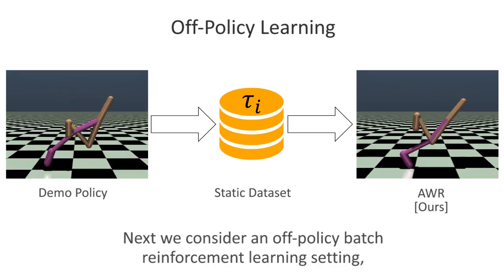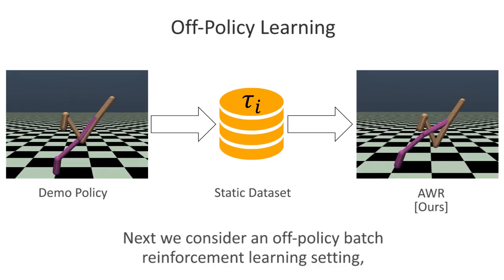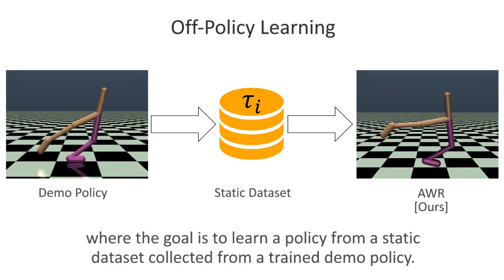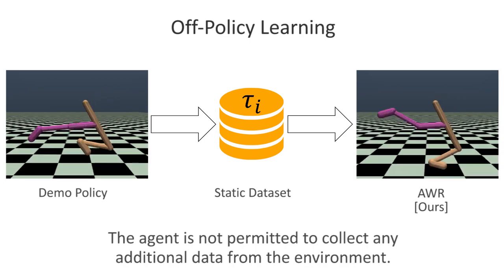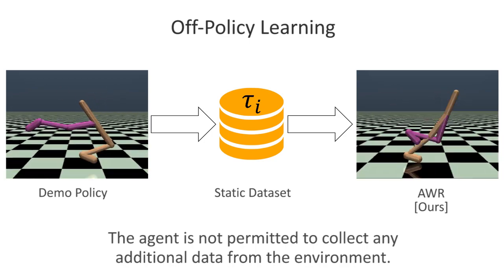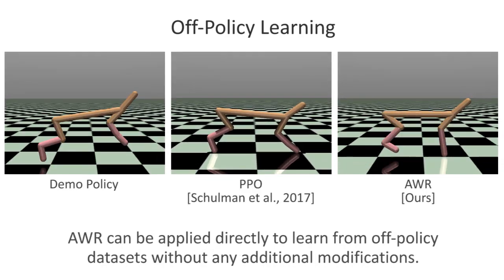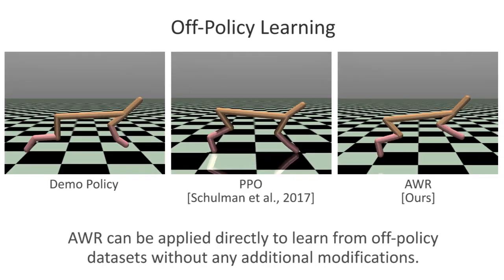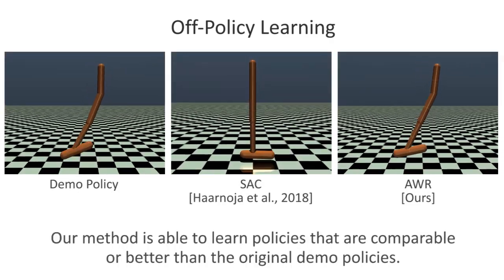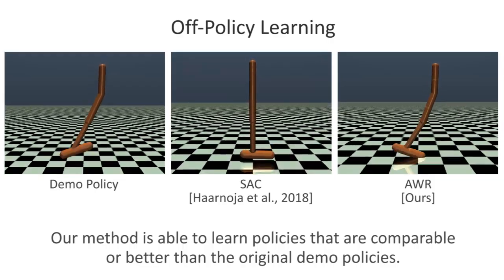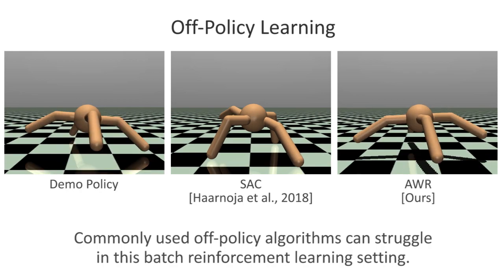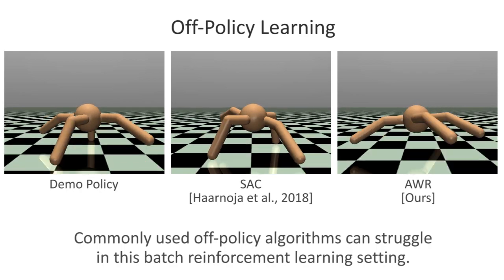Next, we consider an off-policy batch reinforcement learning setting, where the goal is to learn a policy from a static dataset collected from a trained demo policy. The agent is not permitted to collect any additional data from the environment. AWR can be applied directly to learn from off-policy datasets without any additional modifications. Our method is able to learn policies that are comparable or better than the original demo policies. Commonly used off-policy algorithms can struggle in this batch reinforcement learning setting.